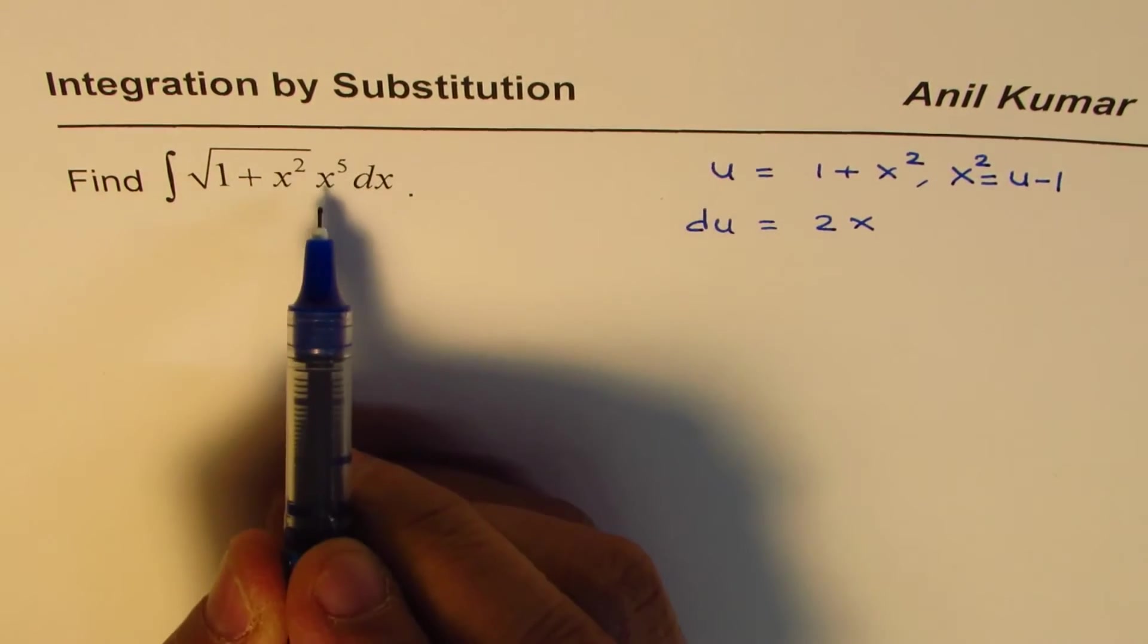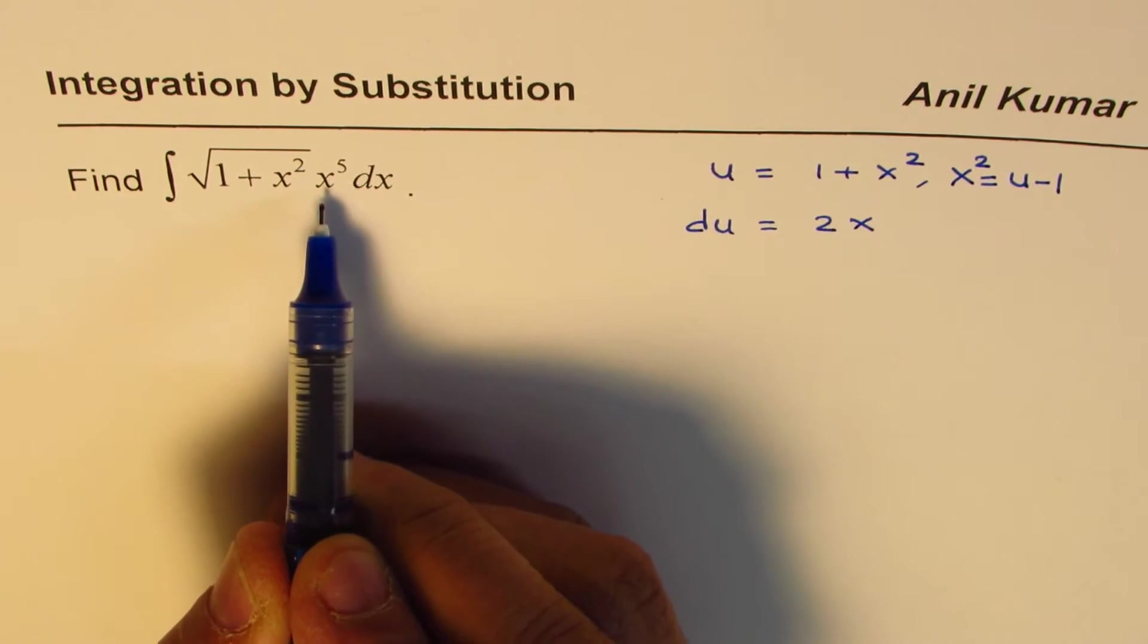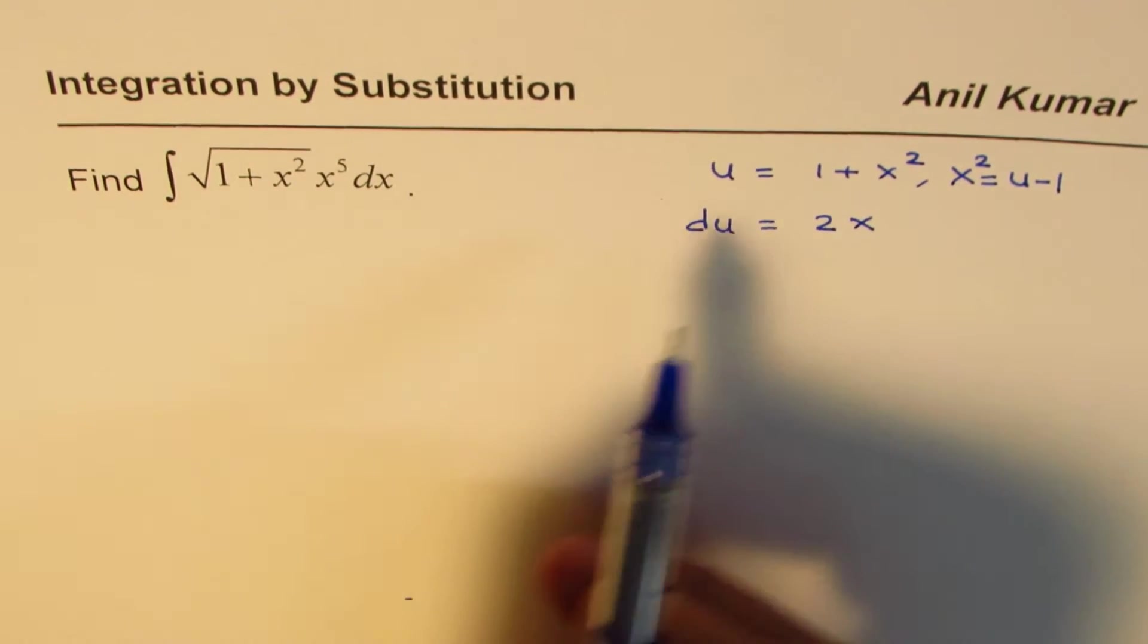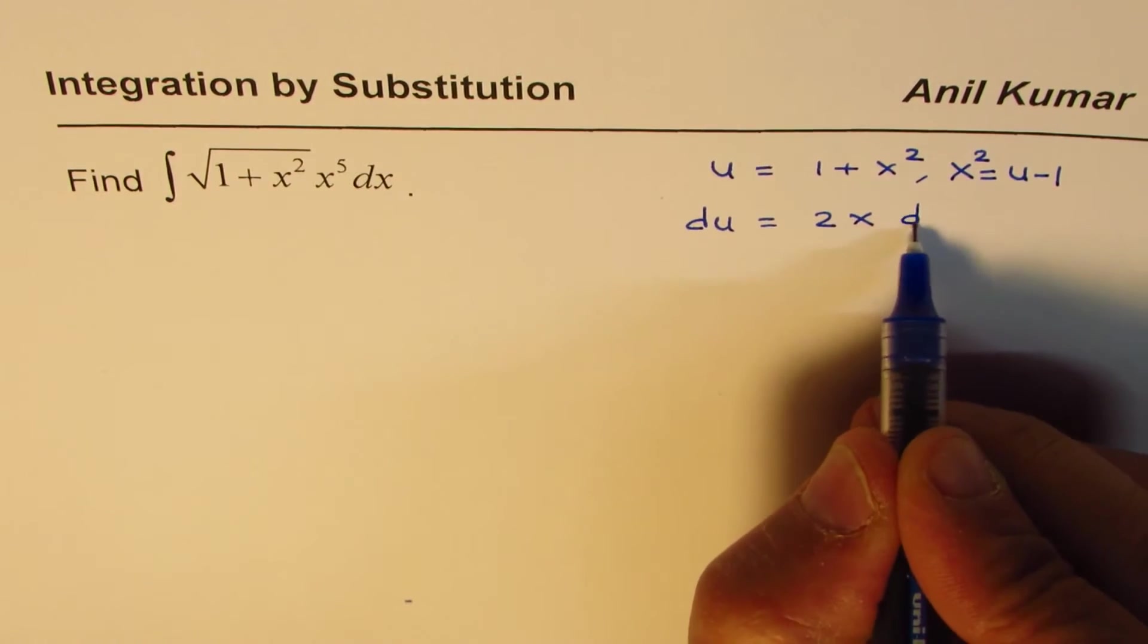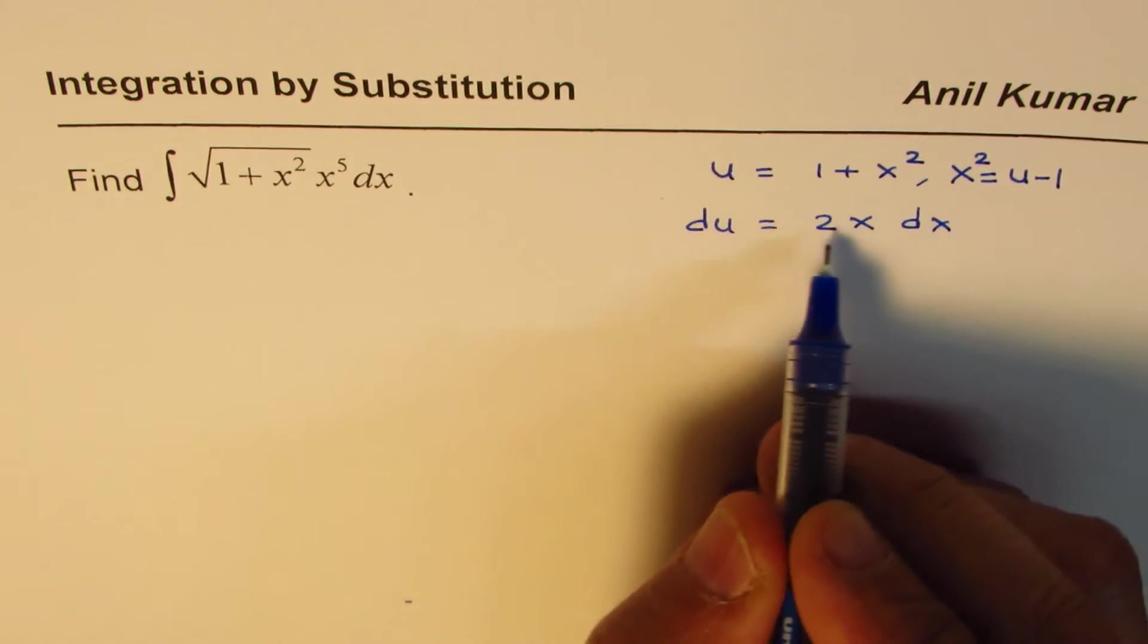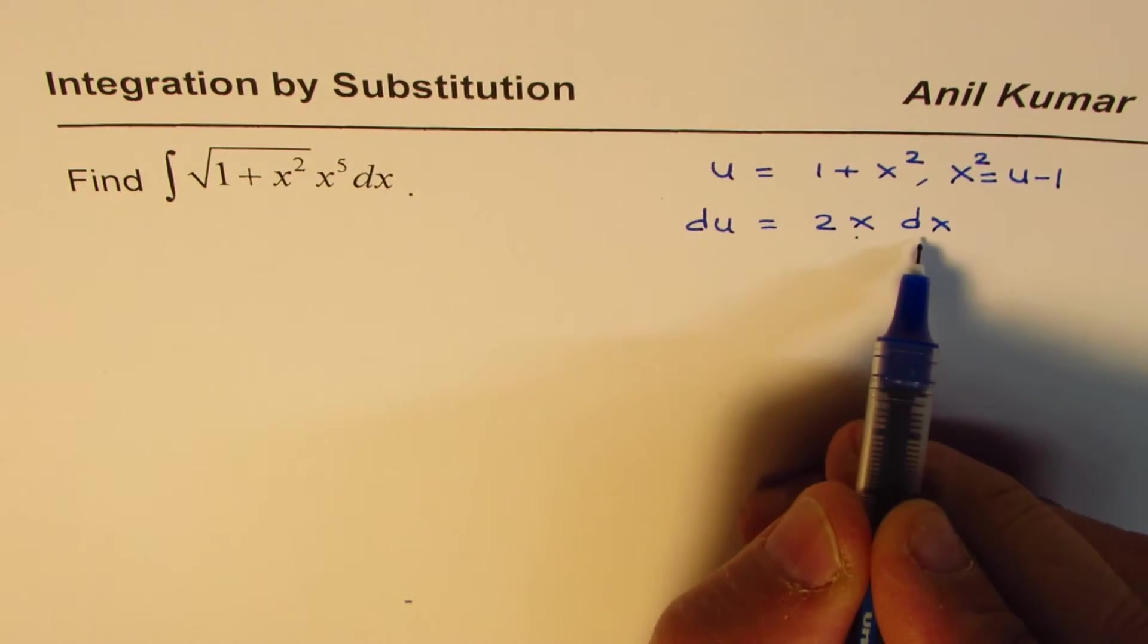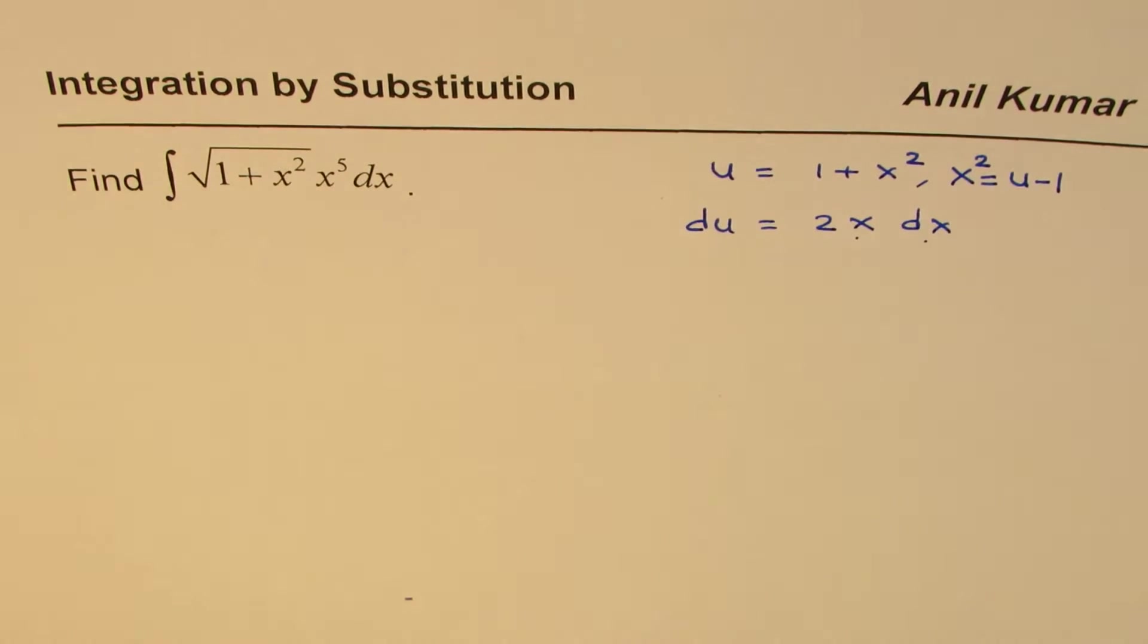So I can actually write x squared as u minus 1, which will take care of x to the fourth, and x dx. I should have written dx here.